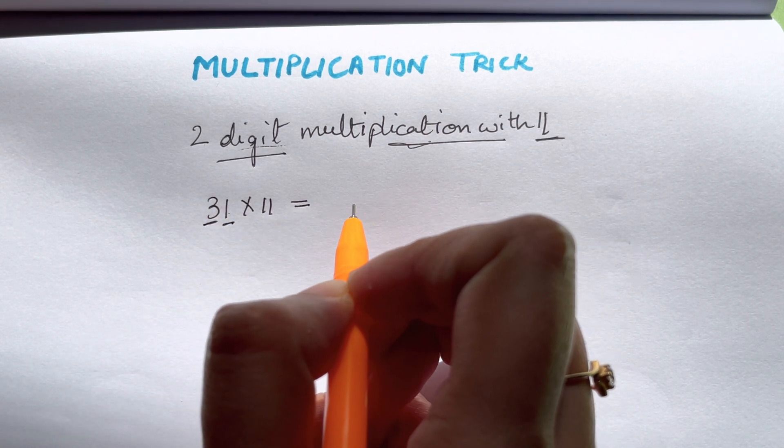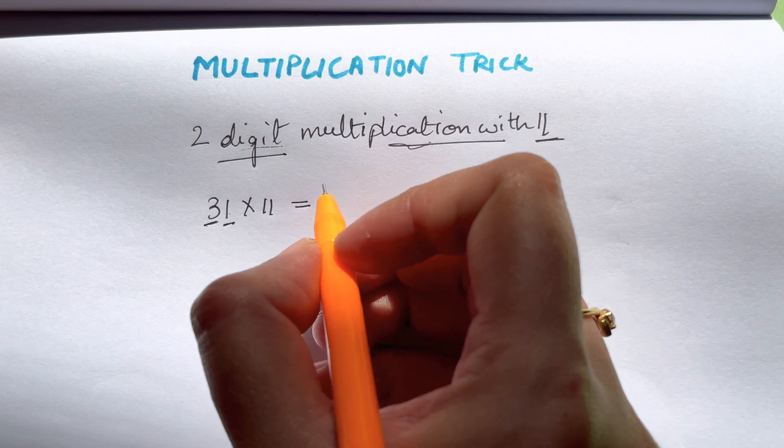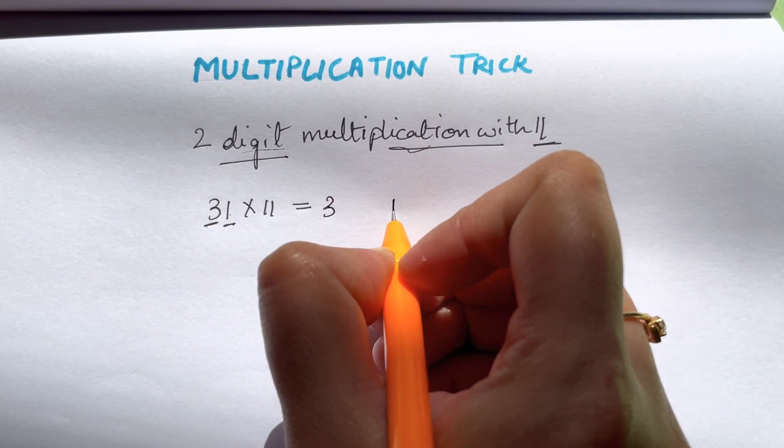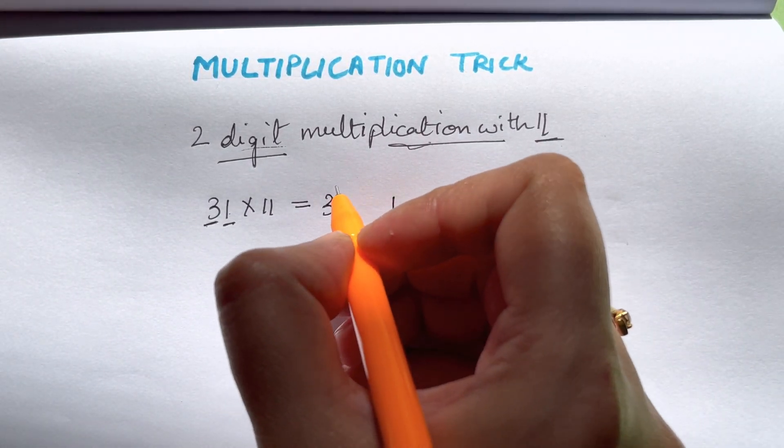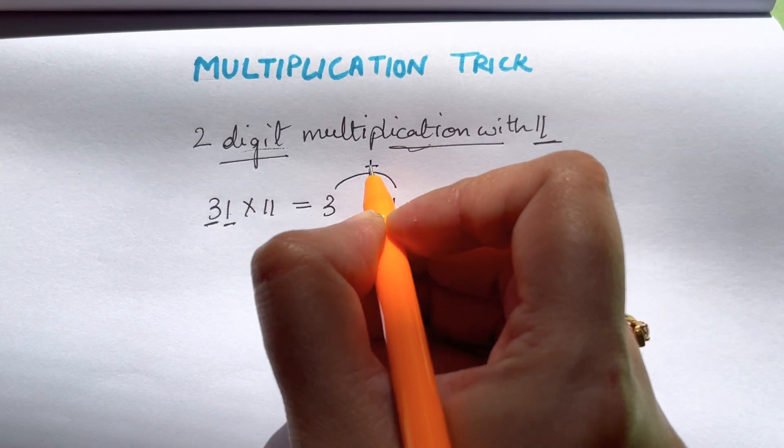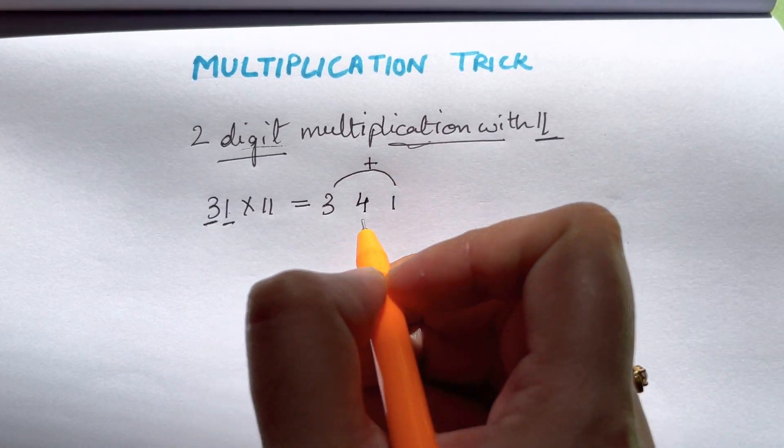So here there are ones and tens, only two digit numbers. I'll just write down 3 here and the last number at the last. What I'm going to do is just add these two numbers. 3 plus 1 will give me 4, so my answer is 341.